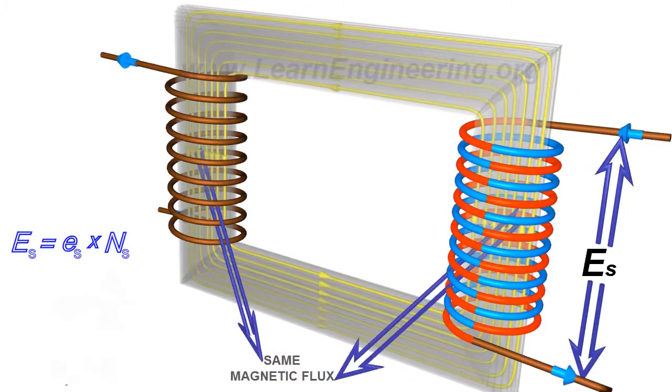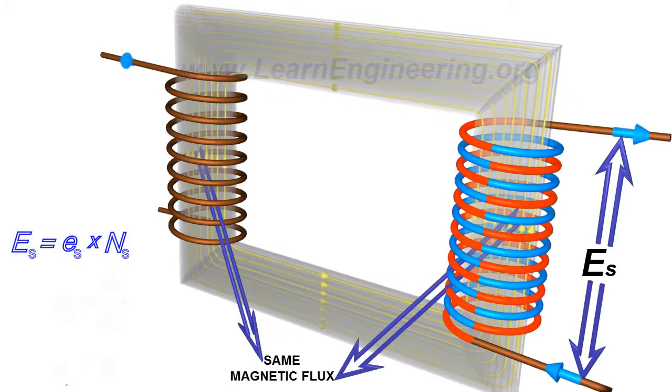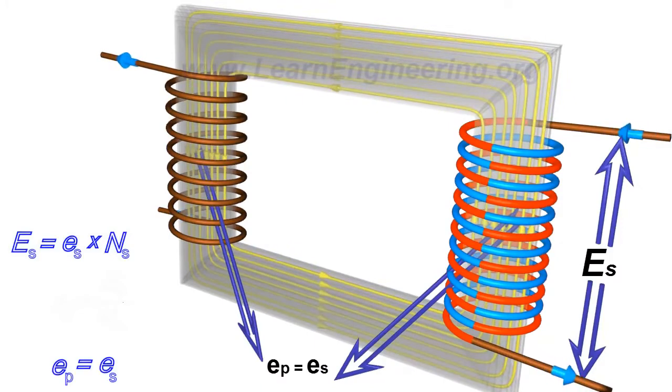Since the same magnetic flux is passing through the primary and secondary coils, the EMF per turn for both the primary and secondary coils will be the same.